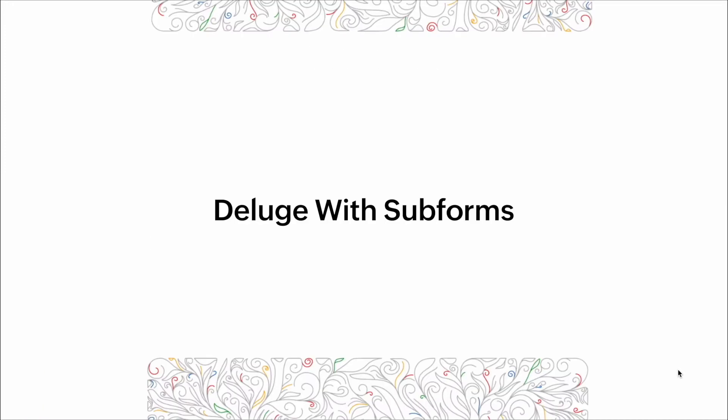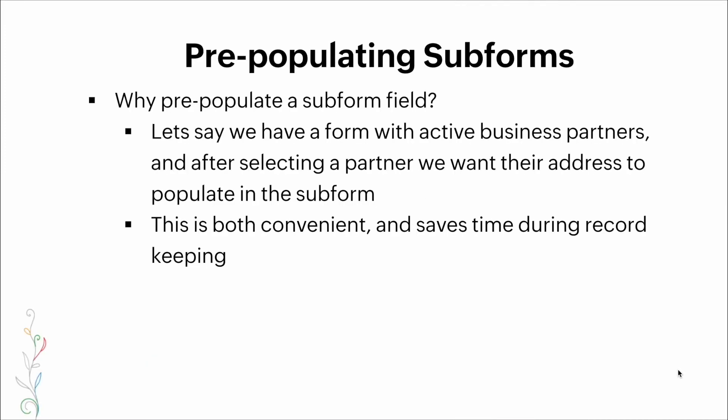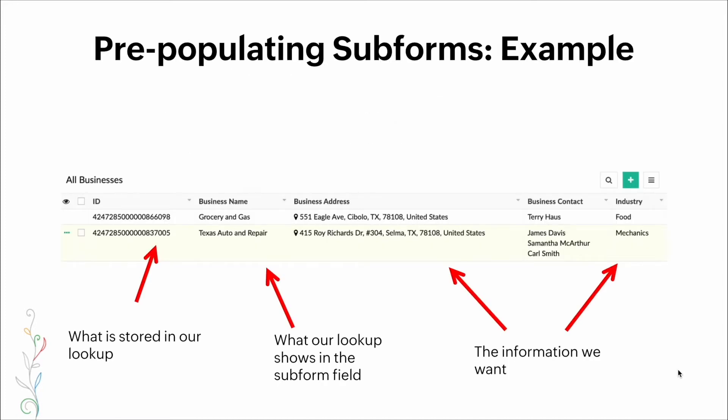Let's look at Deluge with subforms. Pre-populating subform fields — why do we pre-populate a subform field? Let's say we have a form with active business partners, and after selecting a specific partner we want their address to populate in the subform. This is both convenient and saves time during record keeping. Here's a visual: we have a table with two records, where the Record ID on the left is what gets stored in our lookup.